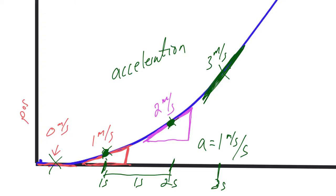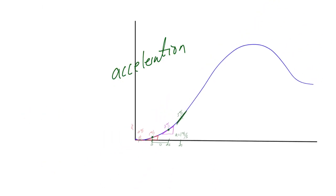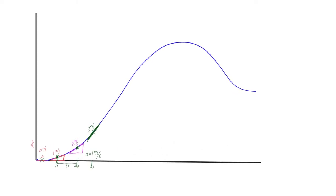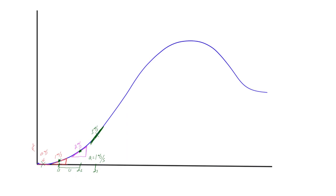That curve tells us there's a speeding-up situation. Let's go ahead and take a look at the rest of the graph. There are various regions to look at. Notice this region — it's pretty stable, like a straight line, not curved. The velocity is increasing at a constant rate, so here there's constant velocity and you wouldn't say it's accelerating at all.